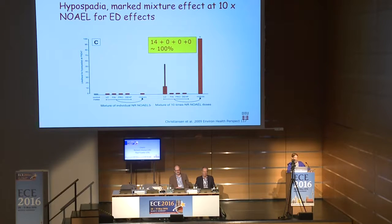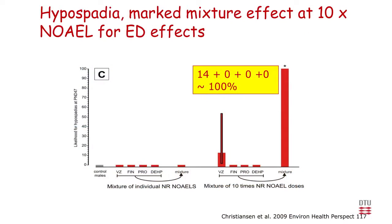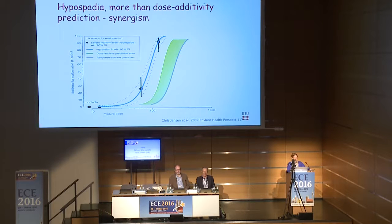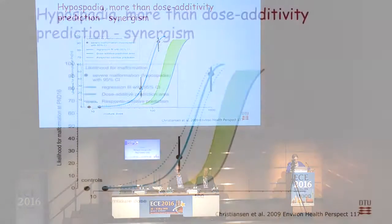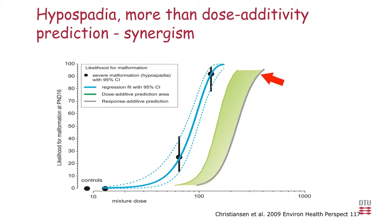We also looked at malformations in this mixture project. With substances dosed at their NOAELs for endocrine disrupting effects, we did not see a mixture effect at the NOAEL for the single substances. However, at 10 times the NOAEL, 100% of the males in the exposed group had severe malformations. Surprisingly, when we compared to the dose addition prediction, our results occurred at a lower dose than predicted — indicating synergism for this endpoint. But that is the only case where we have seen synergism.